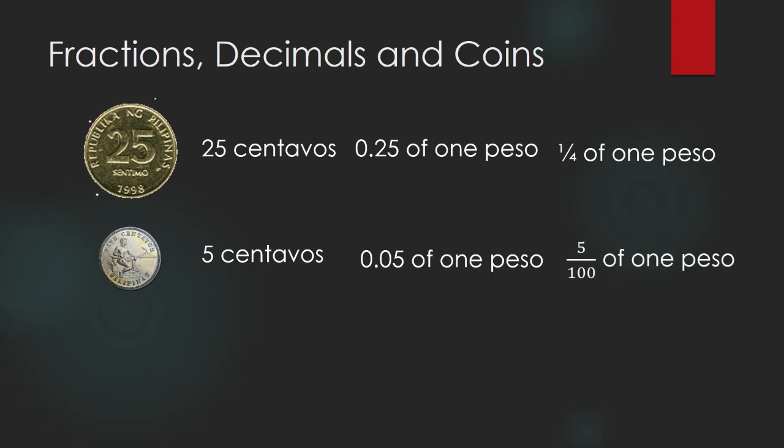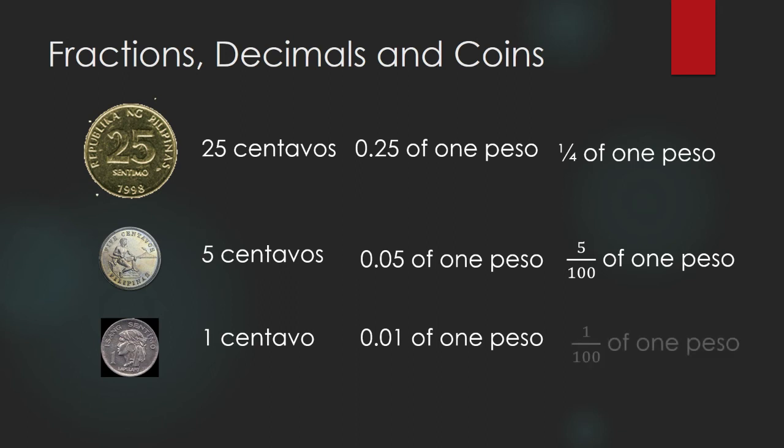This one is one centavo. One centavo is not 0.1 of one peso. 0.1 of one peso is ten centavos. One centavo is 0.01 of one peso. Look at the decimal place, 0.01. It's in the hundredths digit. So, how do you read it as a fraction? It's one hundredth. One over one hundredth of one peso.